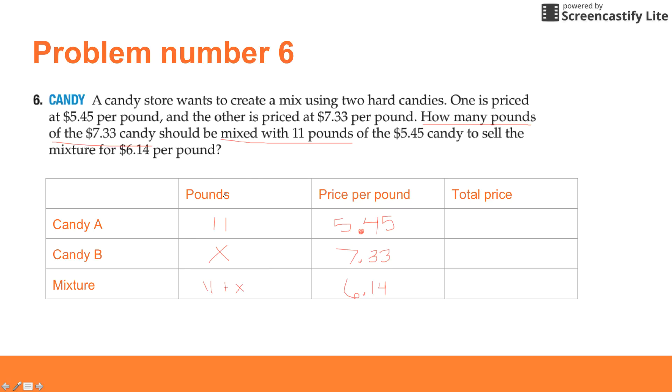The weighted average part of this is that we're going to take the number of pounds we have, the quantity, times the price per pound, and that will equal a total price. Our total price of Candy A will be $5.45 times 11 - I'll let you do the math. Our total price of Candy B will be X times $7.33, so that'll be $7.33X. Then our total price of the mixture would be $6.14 times 11 plus X, and again I'll let you do the math.